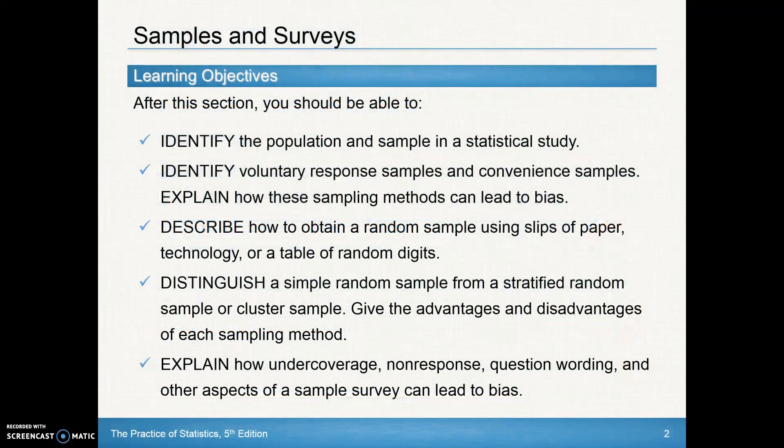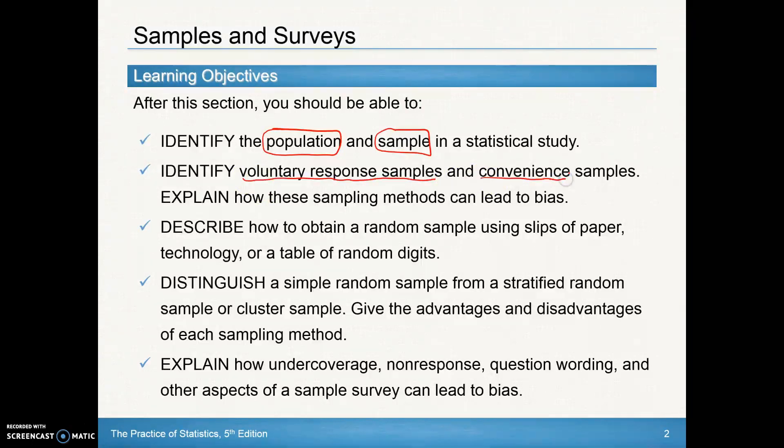So these are all the things we should be able to do in this section. We should be able to identify the population and sample in a statistics study. We're going to look at types of sampling, including voluntary response samples as well as convenience samples.